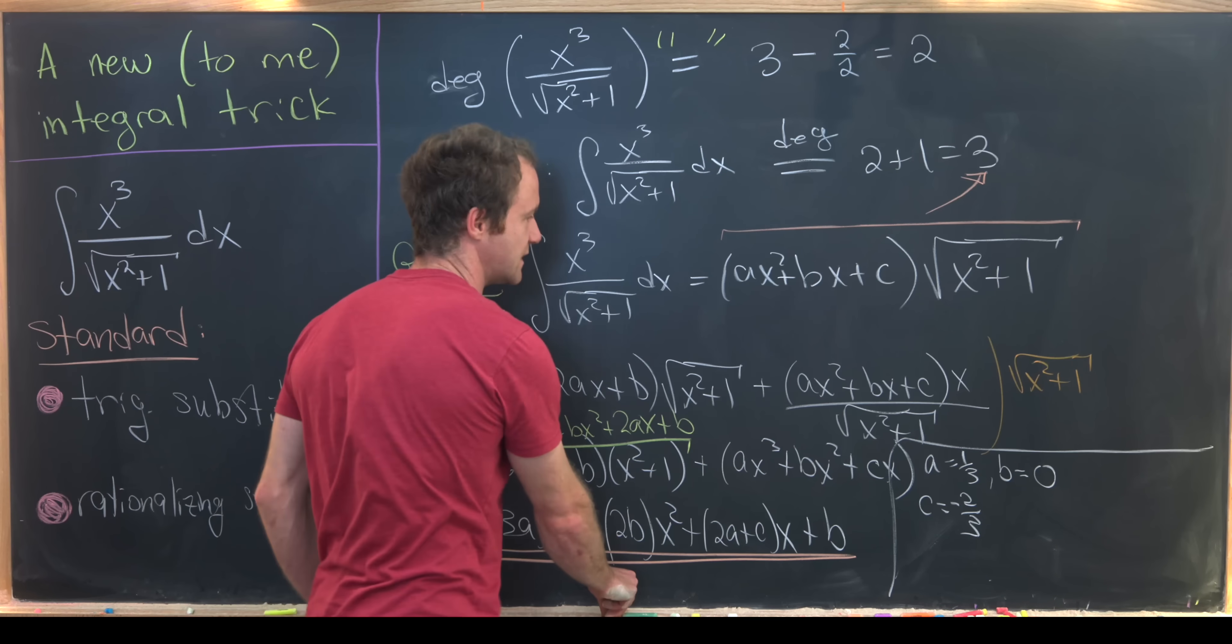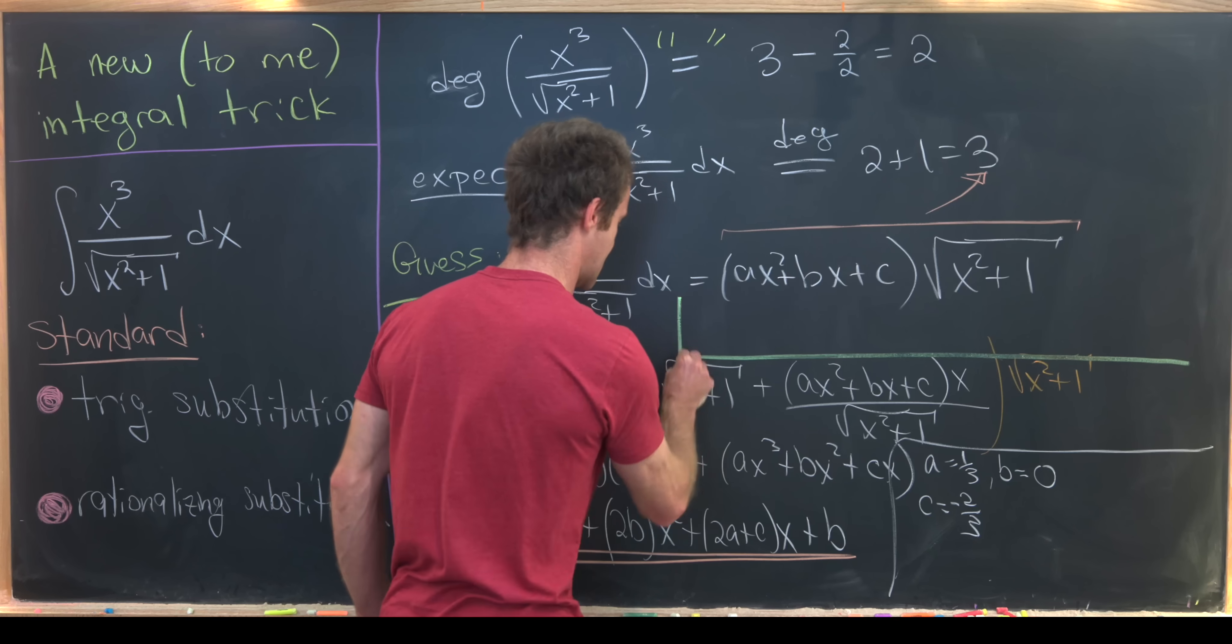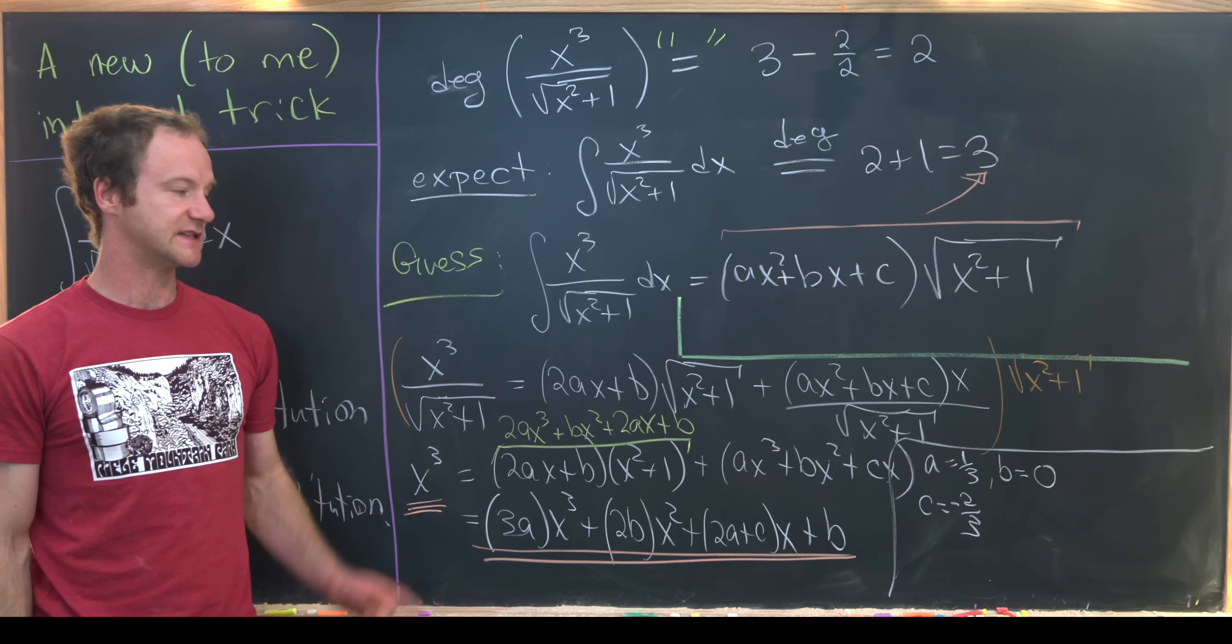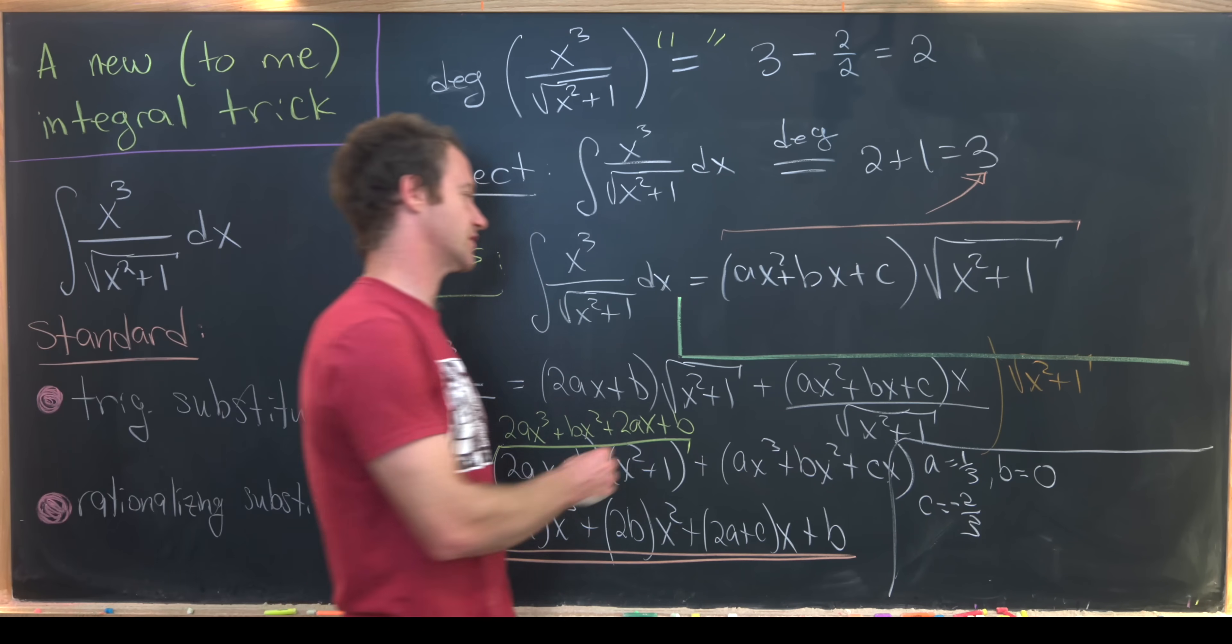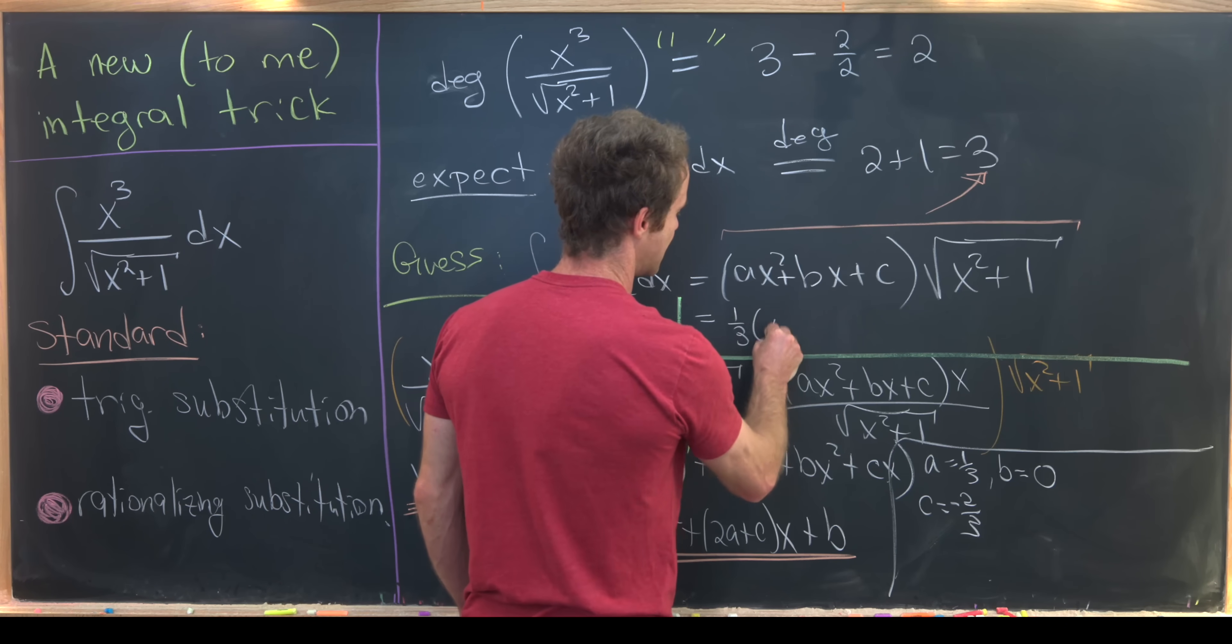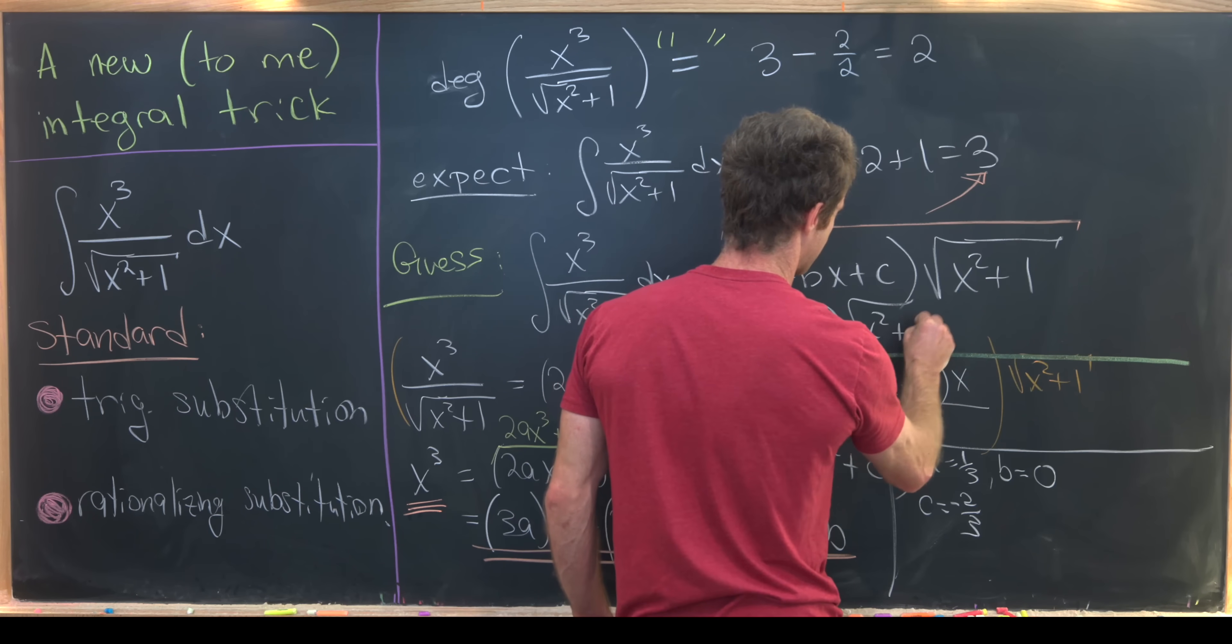Okay. So that means we can finish this whole thing off and I'll fit it in right down here. So we determined that a was equal to a third and c was equal to negative 2 thirds. So that means we have this is 1 third x squared minus 2 times the square root of x squared plus 1.